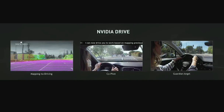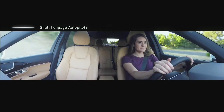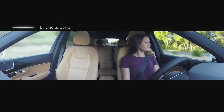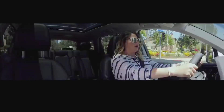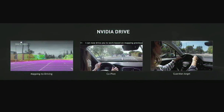The second thing I want to show you is how we use AI not just for driving but as a virtual copilot. 'I can now drive you to work based on mapping previous drives — shall I engage autopilot?' 'Oh sure.' 'Autopilot engaged, driving to work.' Third is a concept Gil Pratt at Toyota created that I really love — the guardian angel. Even when the car is not driving for you, it should be watching out for you. 'Green light, time to go.' 'Cross traffic danger — maybe not.' 'All clear.' 'Disaster averted.' The AI is on all the time, even when not in autonomous vehicle mode.